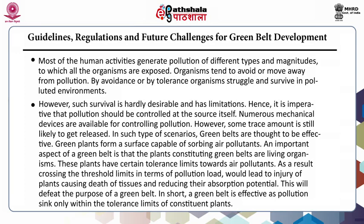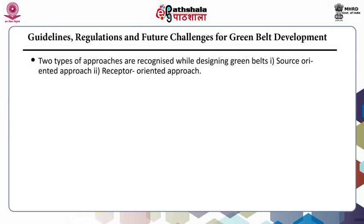Green plants form a surface capable of absorbing air pollutants. An important aspect of a green belt is that the plants constituting it are living organisms. These plants have certain tolerance limits to air pollutants. As a result, crossing the threshold limits in terms of pollution load would lead to injury of plants, causing death of tissues and reducing their absorption potential, thus defeating the purpose of a green belt. In short, a green belt is effective as a pollution sink only within the tolerance limits of the constituent plants.